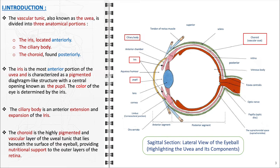Lastly the choroid, located posteriorly, is a highly pigmented and vascularized layer situated beneath the outer surface of the eyeball, extending from the optic nerve to the ciliary body. Its primary function is to provide nutritional support to the outer layers of the retina through its dense network of blood vessels.